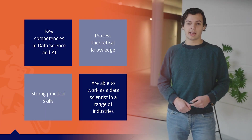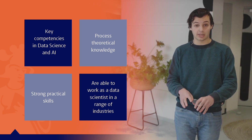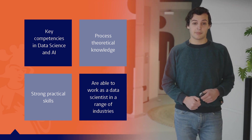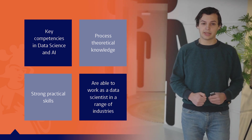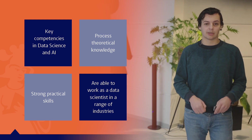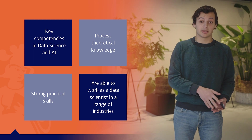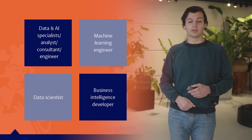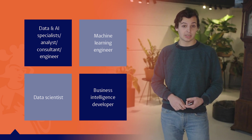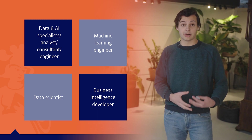So what are the key competencies you will have after doing this bachelor? The first is that you will be able to process theoretical knowledge — you will understand how a neural network works from the inside, not only being able to apply it to a real world problem but actually knowing how these techniques work and how you can optimize them. A second key competency is being very good with practical work — you will be able to implement a reinforcement learning system or a neural network in a real world problem. And finally you will be able to work as a data scientist or an AI expert in a range of industries. Possible jobs include data and AI specialist, machine learning engineer, data scientist, business intelligence developer, or a more general software developer.